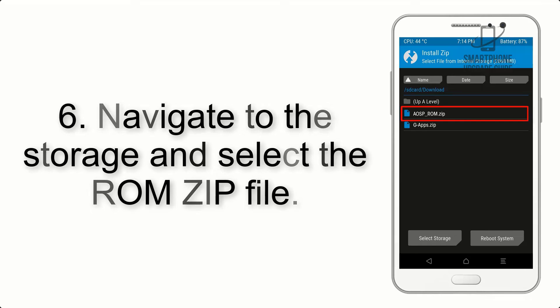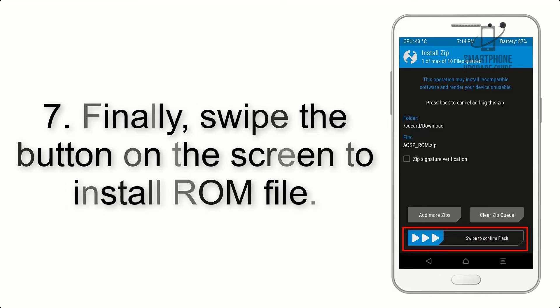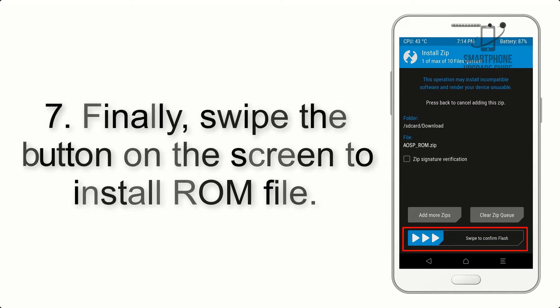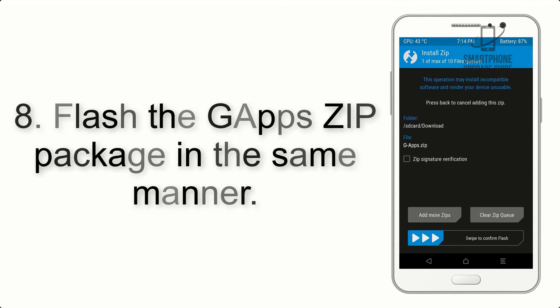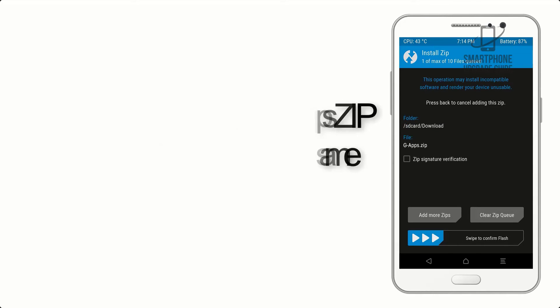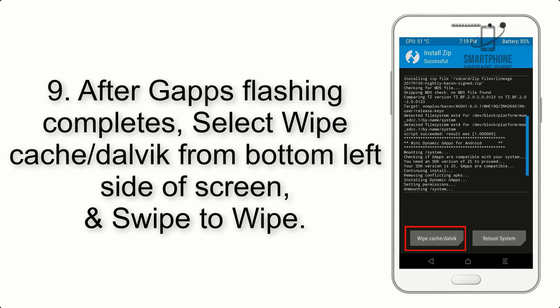Step 6: Navigate to the storage and select the ROM zip file. Step 7: Swipe the button on the screen to install the ROM file. Step 8: Flash the GApps zip package in the same manner.